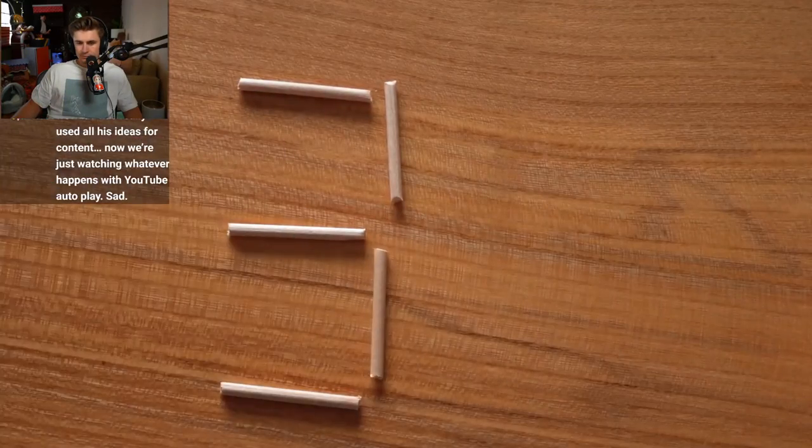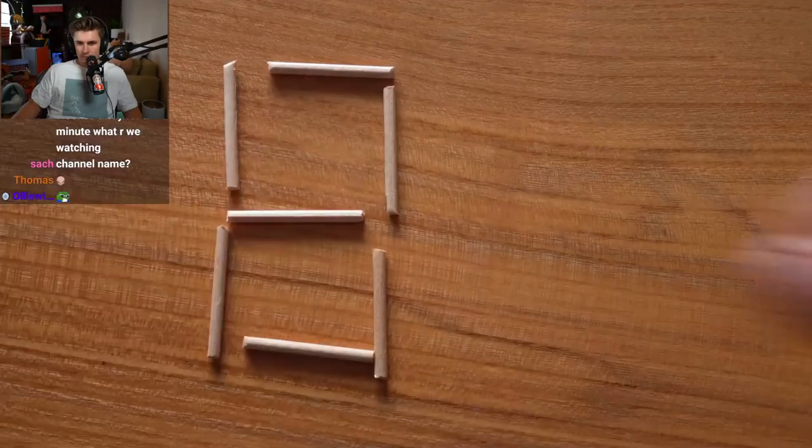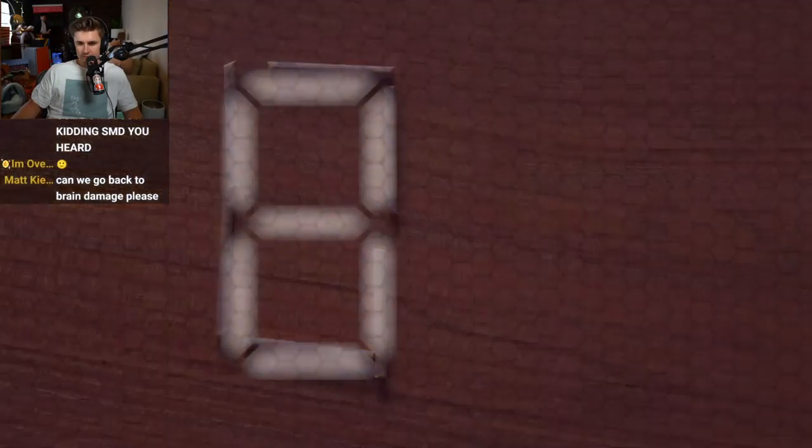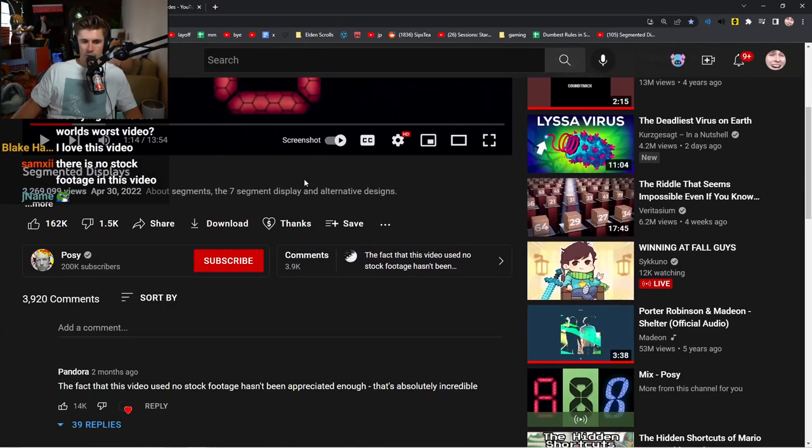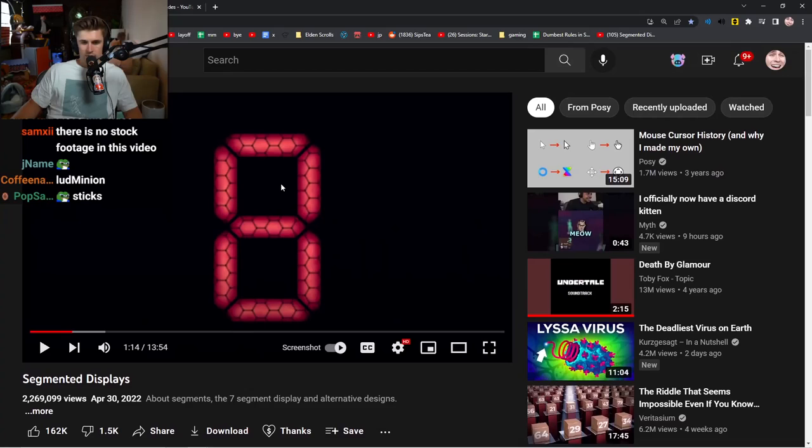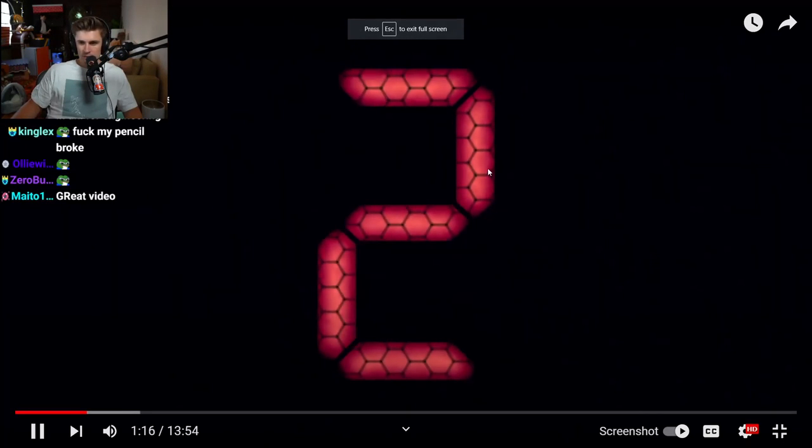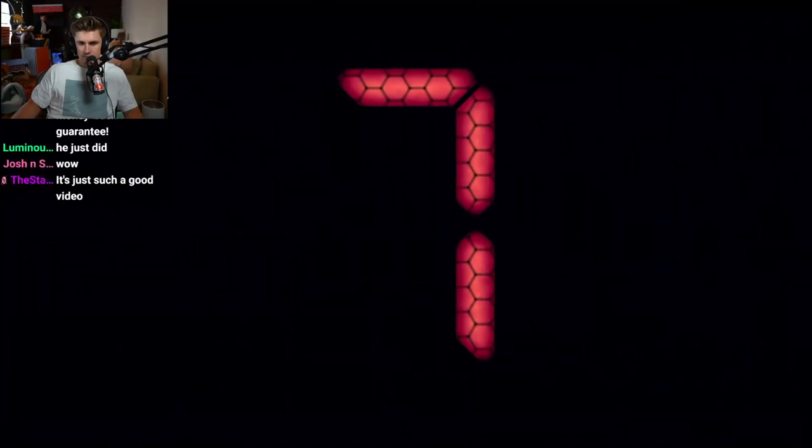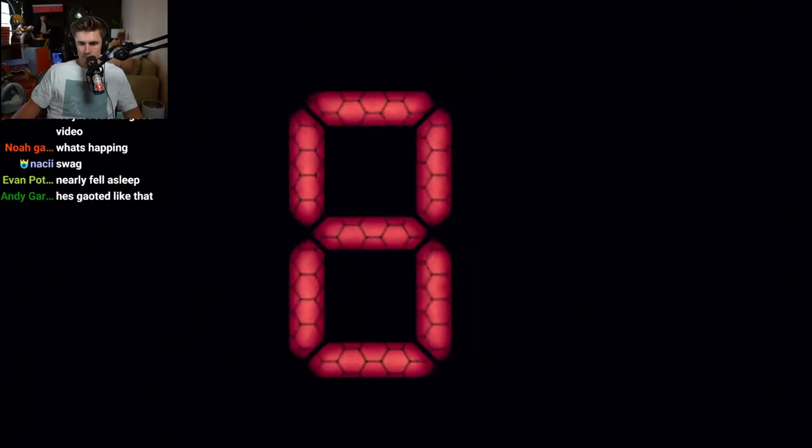But who knows, perhaps someone designed it before digits even existed by dropping some sticks. Let's call this design the double square. The double square is not truly capable of displaying numbers exactly right.